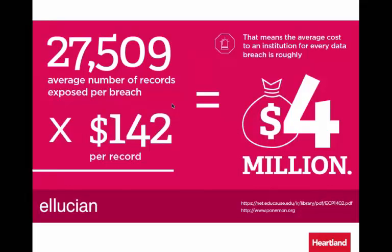Ellucian has calculated that in each data breach, there is an average of 27,509 records exposed at an estimated cost of $142 per exposed record — that's more than $4 million per breach. That's quite a bit of money, and another reason why we look to secure transactions on your campus and minimize the risk while processing transactions through your OneCard system.